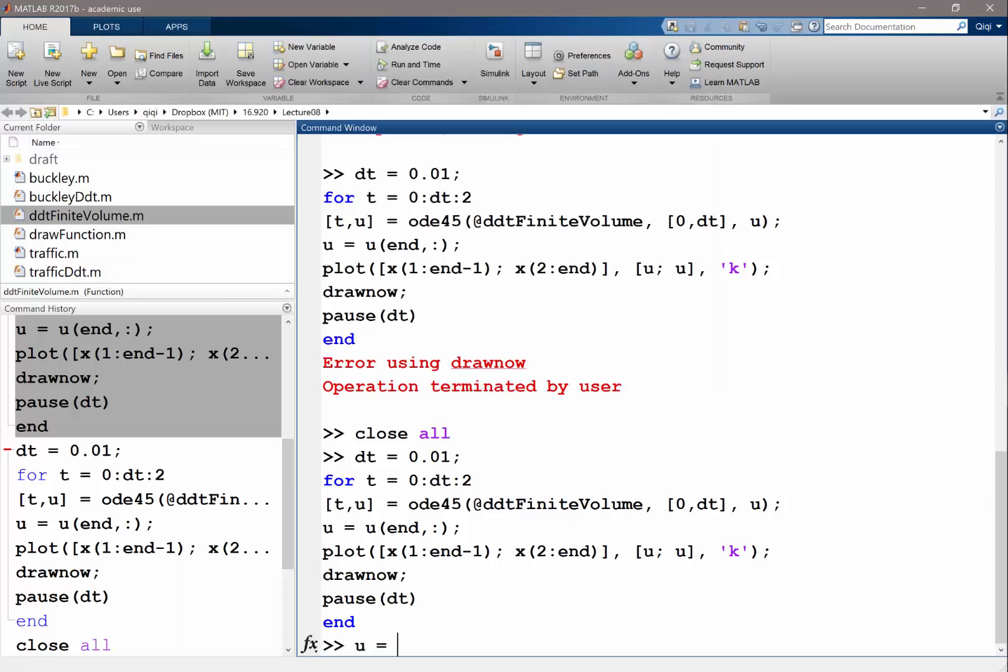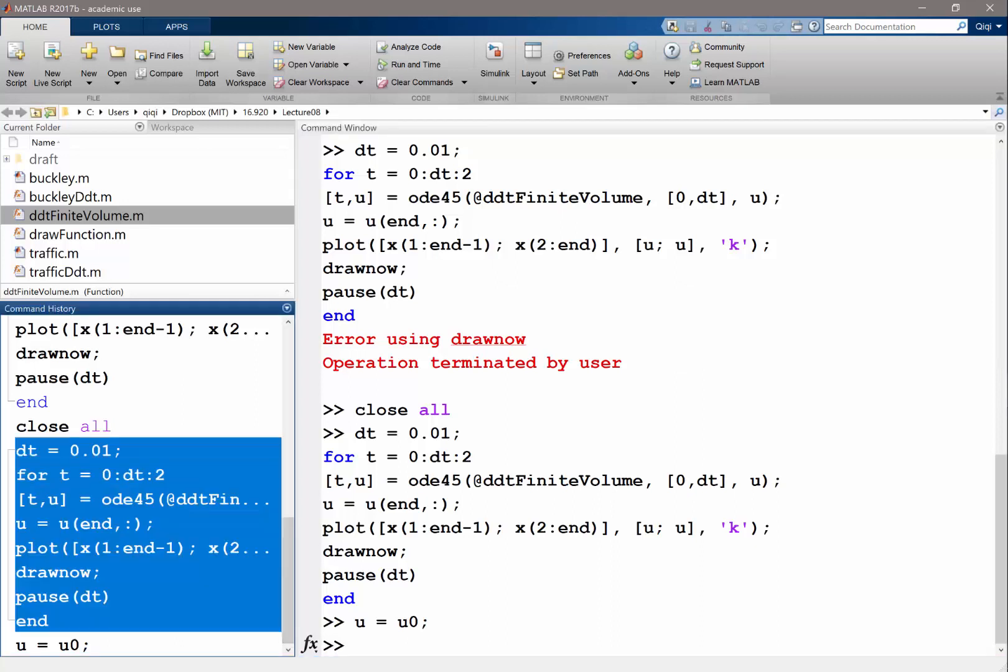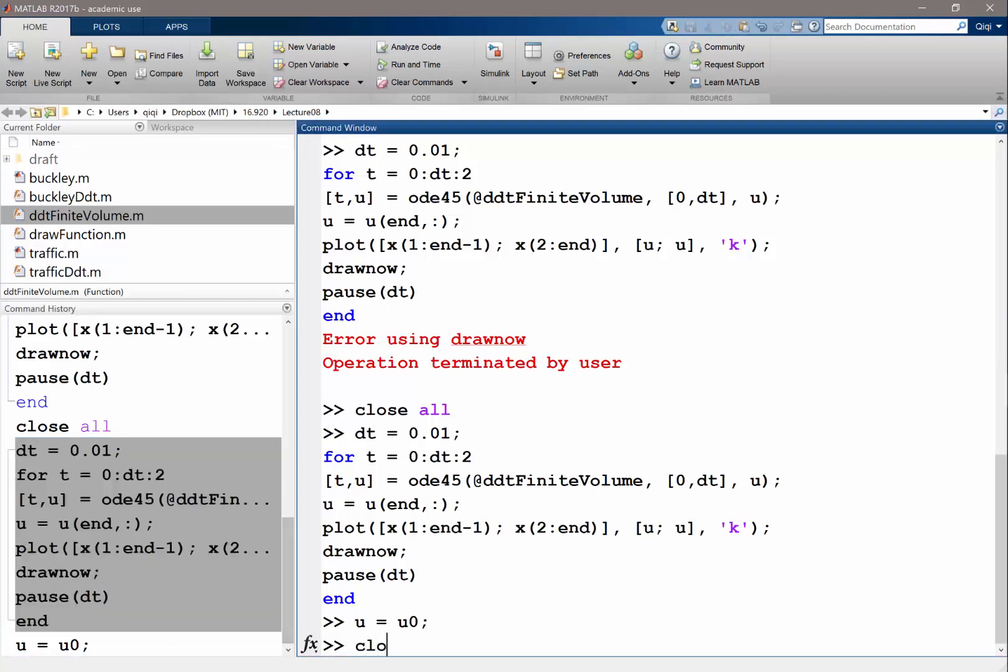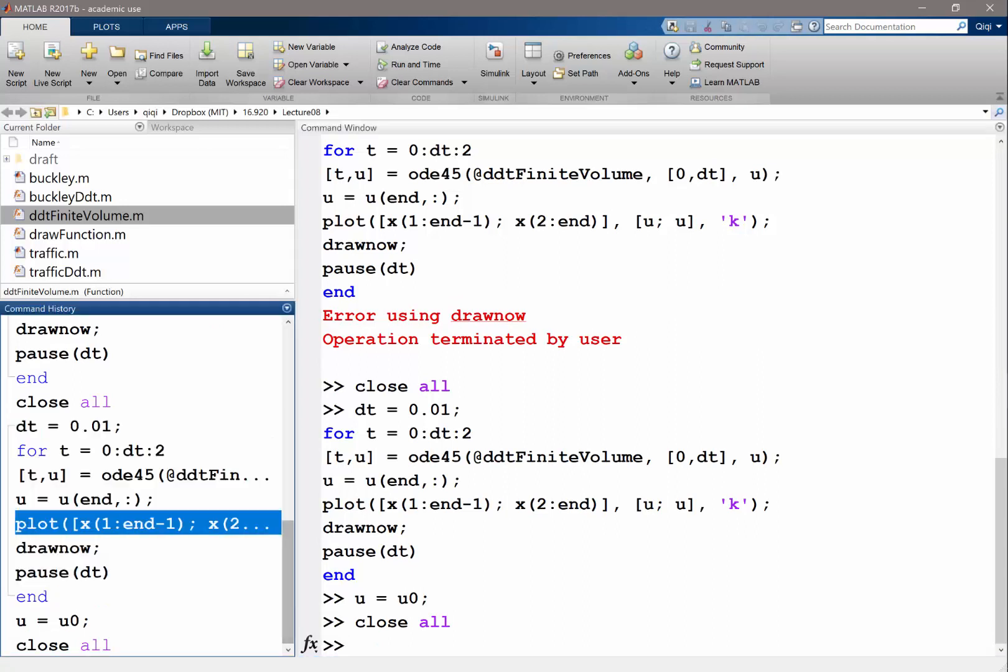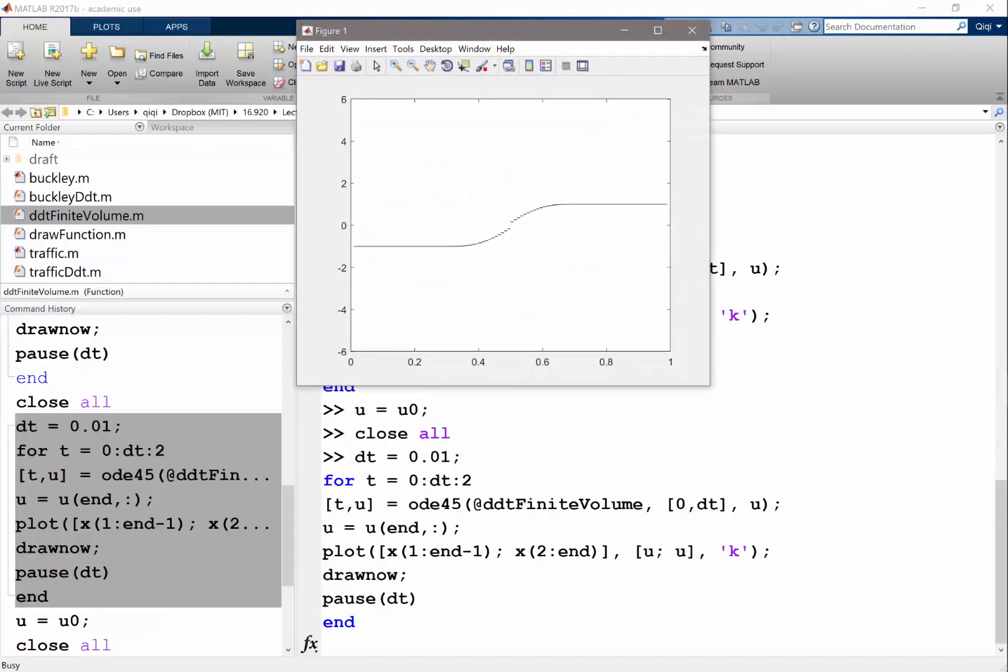Oh, I didn't set u equal to u zero. Close all. Evaluate. Right, so I think we get the right solution that they tend to flatten out.